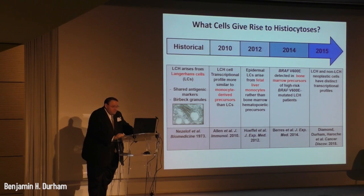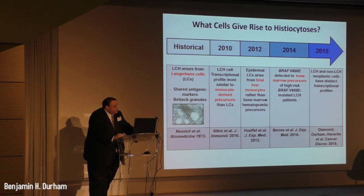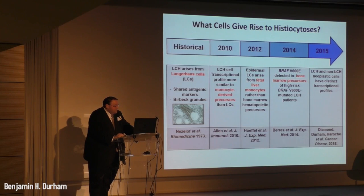Finally, work from the Texas Children's Group with Kim McLean and Carl Allen found that LCH cells actually have transcriptional profiles more similar to monocyte-derived precursors rather than Langerhans cells. Many groups working on the ontogeny of macrophages and dendritic cells in mouse models found that epidermal Langerhans cells actually arise from fetal liver monocytes rather than bone marrow-derived macrophage precursors in the murine system.